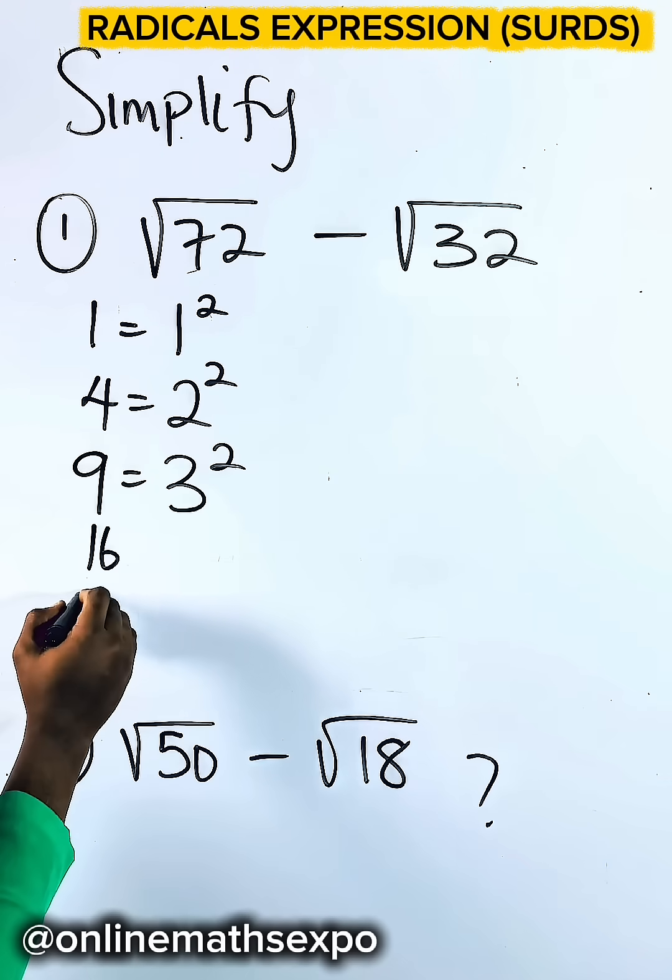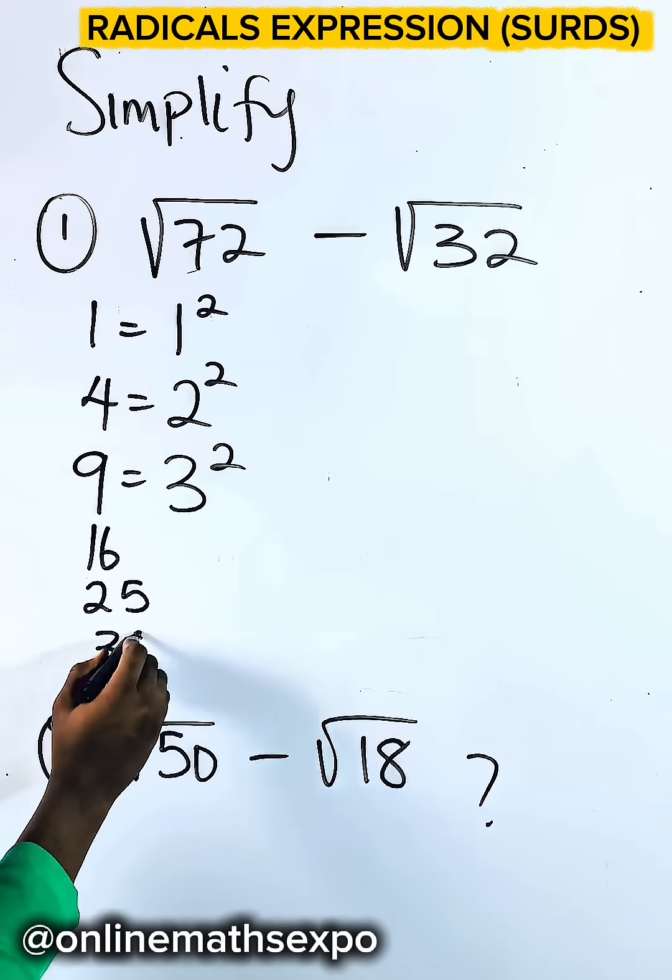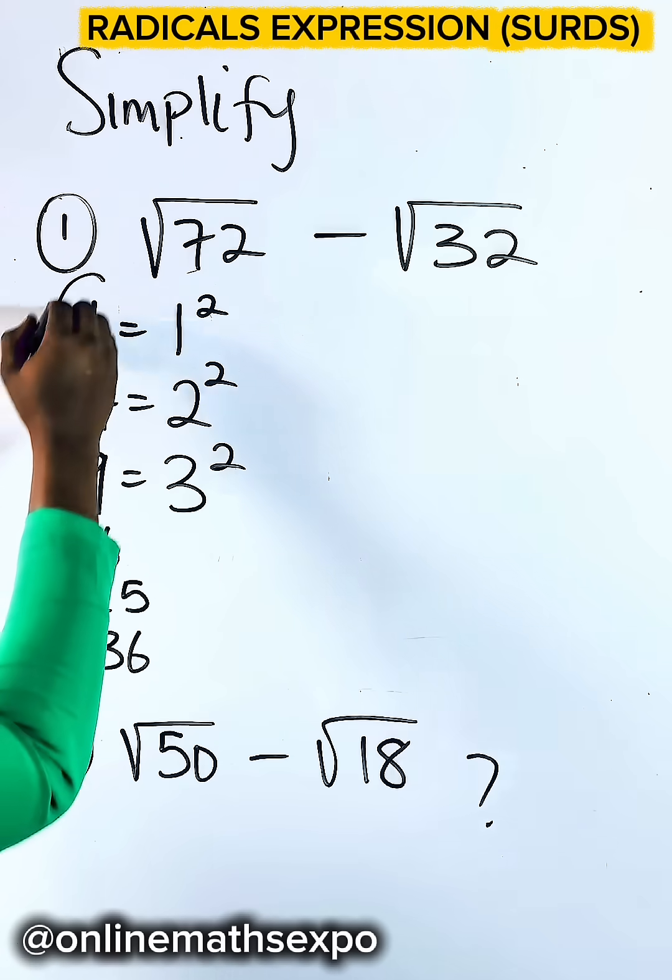16 is a square number, 25 and 36 and more. So these are the square numbers.